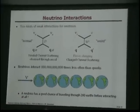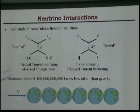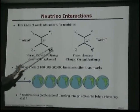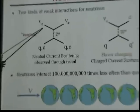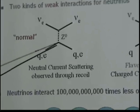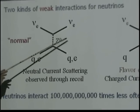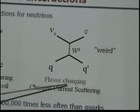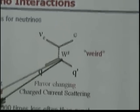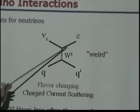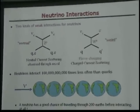There are two kinds of interactions for neutrinos. The normal interaction is called a neutral current — a neutrino through the weak interaction emits one of these neutral vector bosons and just gets deflected. The other one is called the flavor-changing current, because a neutrino comes in, interacts through the weak interaction, but this time turns into the charged W boson and turns into an electron.